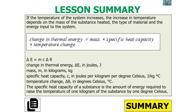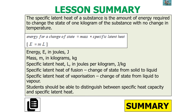To summarise: if the temperature of a system increases, the increase depends on the mass of the substance, the type of material, and the energy input, given by E = mcΔT. The specific heat capacity C is the amount of energy required to raise the temperature of one kilogram of a substance by one degree Celsius. The specific latent heat is the amount of energy required to change the state of one kilogram of a substance with no change in temperature, given by E = mL, covering both latent heat of fusion and latent heat of vaporization.